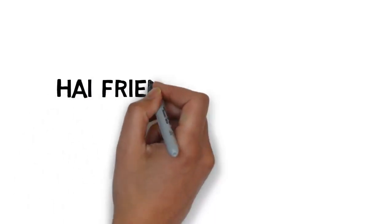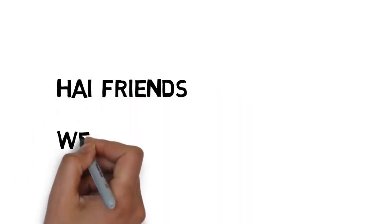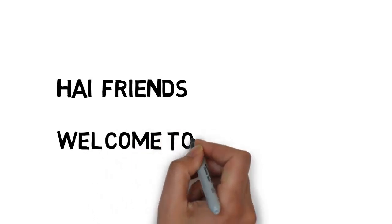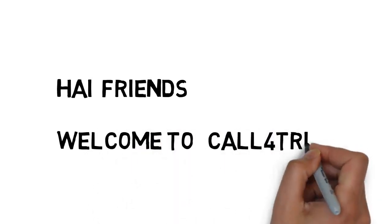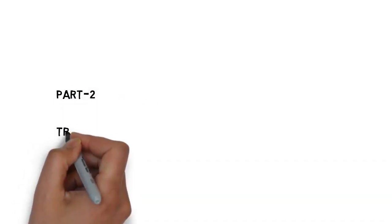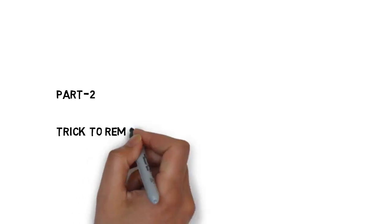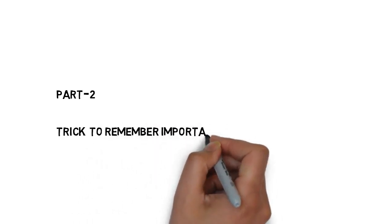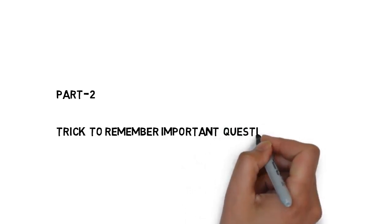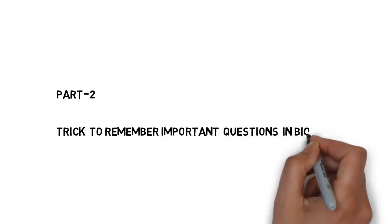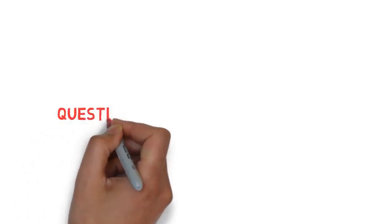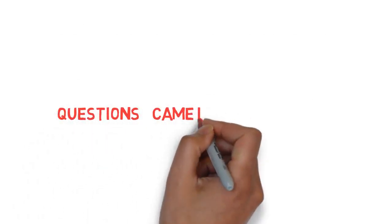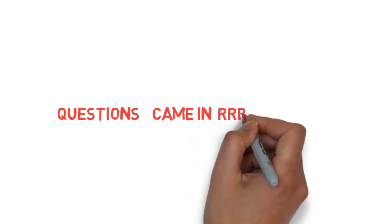Hi friends, welcome to Call for Trick. I hope you watched my previous videos on tricks for currencies, capitals, headquarters, national games, history, and geography. If you haven't, please go and watch them. Here we are going to see Part 2 on important tricks for important questions in biology. Friends, don't neglect this because we can expect 5 to 10 questions in biology in every government exam. Let us see the important questions which were asked in previous RRB exams.